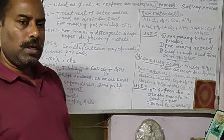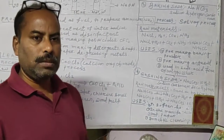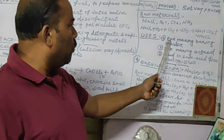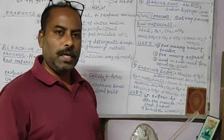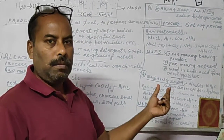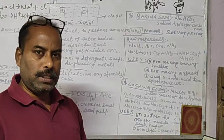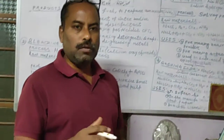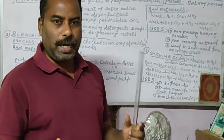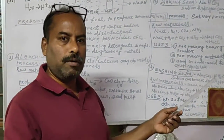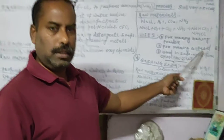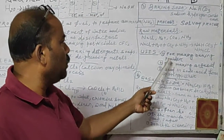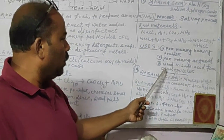The uses of baking soda include: making baking powder — a mixture of baking soda and tartaric acid — used to make soft and spongy idli, paratha, cakes, and bread in the baking industry and kitchen. It is also used for making antacids, since it is a mild base used to relieve stomach pain.